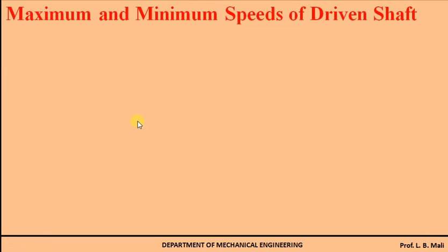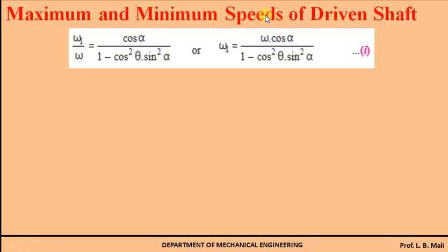In this video we are going to study the next part of the hook joint — that is the maximum and minimum speed of the driven shaft. In order to find out the maximum and minimum speed of the driven shaft, we have to use the equation of ratio of shaft velocity: ω₁/ω = cosα / (1 − cos²θ · sin²α). Taking ω to the RHS, this equation becomes ω₁ = ω · cosα / (1 − cos²θ · sin²α).